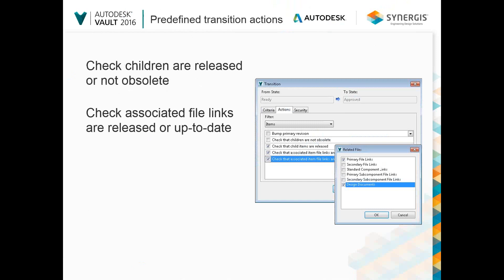Within the lifecycle definition, transition actions specific to items have been added. These can be set to check that children are released or not obsolete, and that associated file links are released or up to date — whether those are primary or secondary file links or design documents.